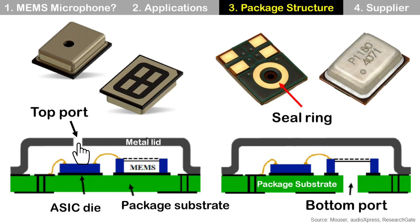Top port has a port at the metal lid, so sound waves reach the MEMS microphone die through that hole. Bottom port has a port at the package substrate. For a bottom port MEMS microphone, it has a sealing at the bottom of the package substrate, attached to the board using solder paste. This sealing creates an airtight seal and secures the sound path into the MEMS microphone.